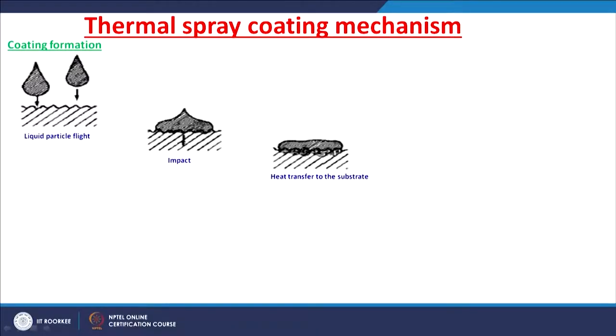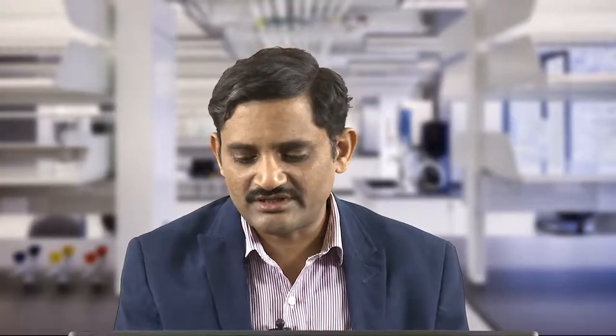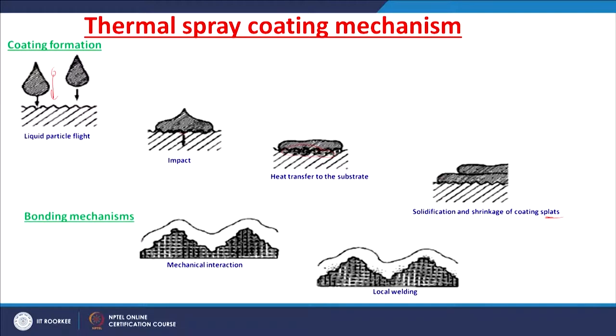Thermal spray coating formation mechanism: initially the particles are heated to a molten or semi-molten state. These particles impinge on the surface and transfer heat onto the substrate. In the later stages, they solidify into a coating splat. Solidification and shrinkage of the coating splats are the final result of this coating — a layer-by-layer structure consisting of splats.